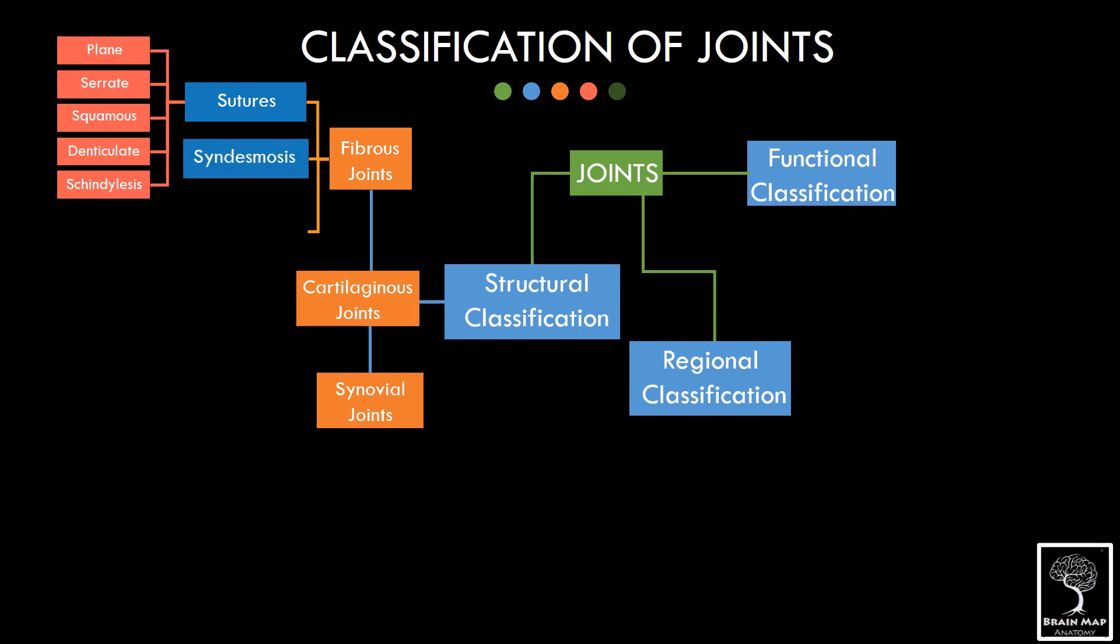Syndesmosis is the second type of fibrous joint. Syndesmosis is the Greek for ligament, and here the bones are connected by interosseous ligaments. Middle radio-ulnar joint and inferior tibia-fibular joint are examples of syndesmosis.